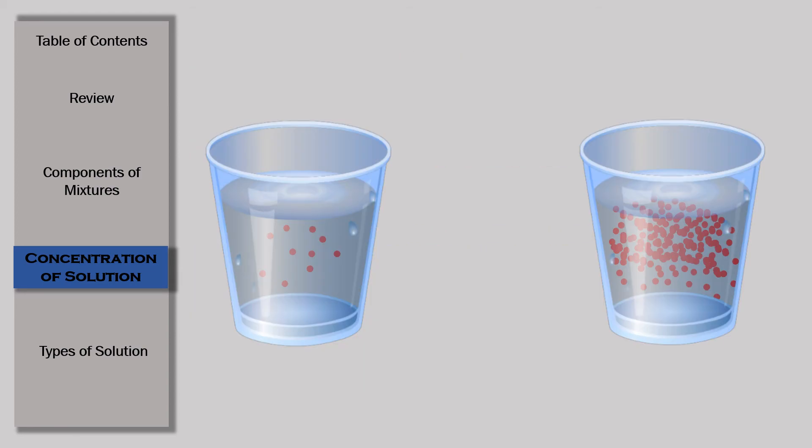In this example, we have two glasses of water. The first glass of water contains less amount of red powder. The red powder is our solute.